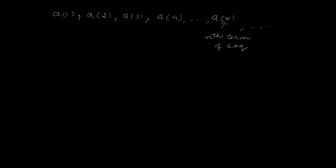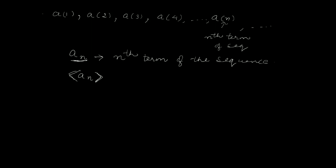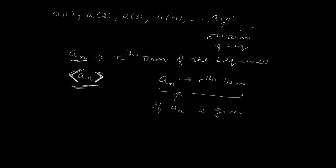Sometimes we also represent the sequence in the form {An}. Thus, An represents the nth term of the sequence. If we write An in brackets, that denotes the sequence. Without brackets, if we just write An, that is the nth term of the sequence. So this is the difference: An alone denotes the nth term, while {An} in brackets denotes the sequence.